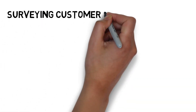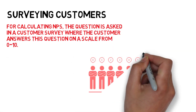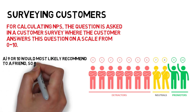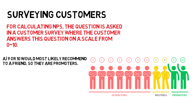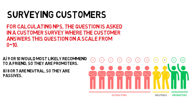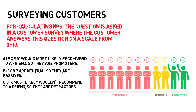The next part is Surveying Customers. For calculating NPS, the question is asked in a customer survey where the customer answers this question on a scale from 0 to 10. Customers who answer with a 9 or 10 would most likely recommend to a friend. Those who answer with 7 or 8 are neutral. Those who answer 0 to 6 most likely would not recommend to a friend.